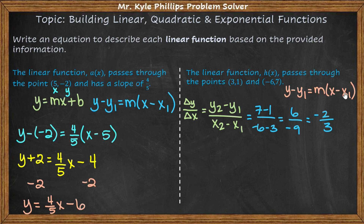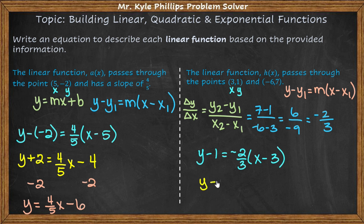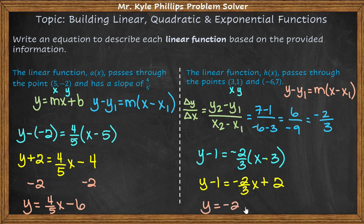I'm going to choose the point three, one — it really doesn't matter which one you pick, but I don't want to work with negatives. So I have y minus y1 equals m, the slope we just found, negative two-thirds, times x minus x1. Simplifying: y minus one equals negative two-thirds x plus two, because that negative times that negative gives a positive. Adding one to both sides, my equation is y equals negative two-thirds x plus three. That is the equation that passes through each of these points.